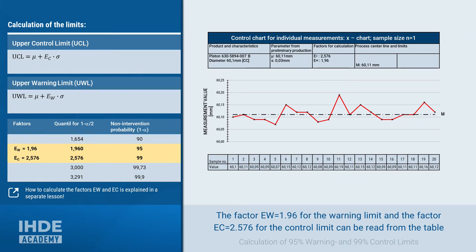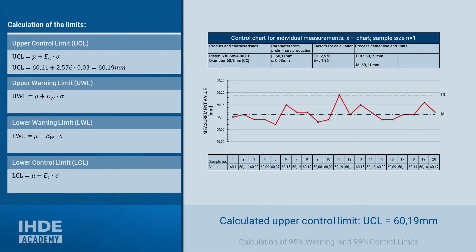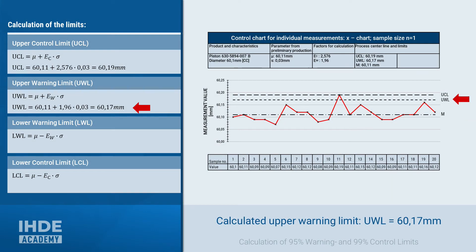Let's put the values into the formula for the upper control limit. From the mean 60.11 plus 2.576 for EC times the standard deviation 0.03, we get the upper control limit of 60.19 mm, which has already been drawn on the control chart on the right. Accordingly, we get the upper warning limit (UWL) from the mean value 60.11 plus 1.96 for EW times the standard deviation 0.03 mm. This results in an upper warning limit of 60.17 mm, as also shown on the control chart.